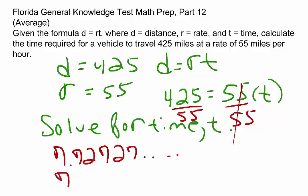So we can round it to the nearest hundredth if we like, 7.73. And this represents the time in hours.